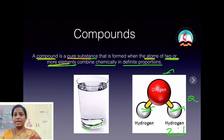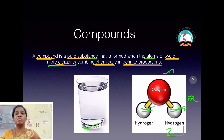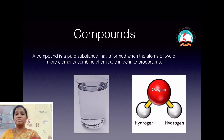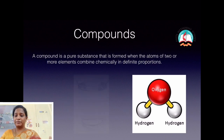Again, the definition: a compound is a pure substance that is formed when the atoms of two or more elements chemically combine in a fixed proportion.